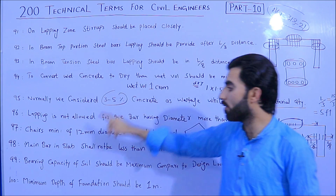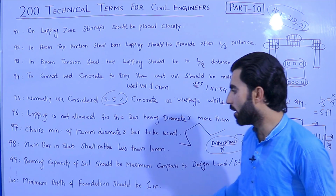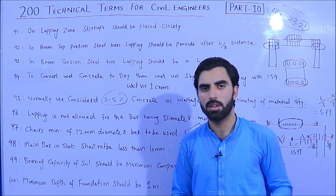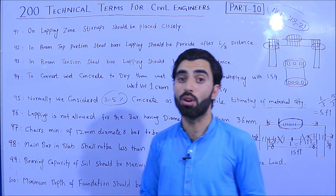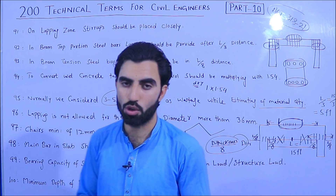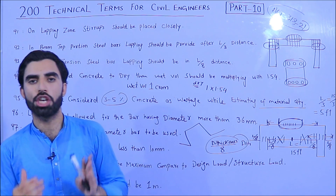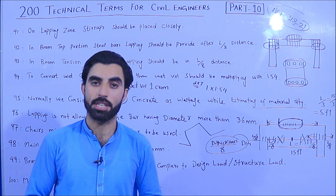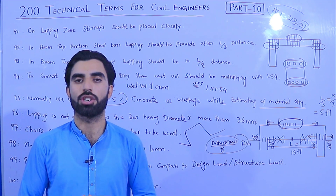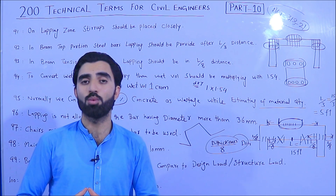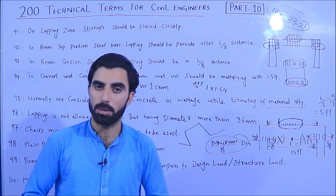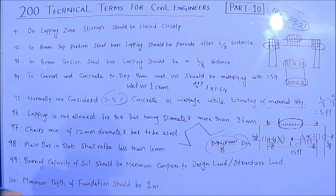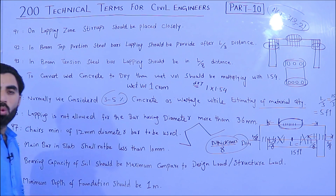Term 100: The minimum depth of foundation should be one meter. If you don't have a structural design and are constructing a domestic building, keep the foundation depth at least one meter. Anything less than one meter may cause problems for the structure.